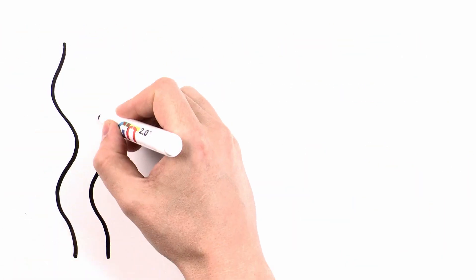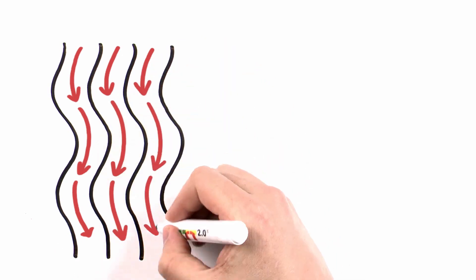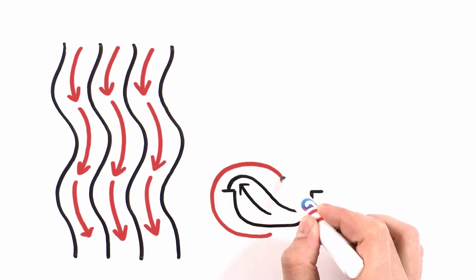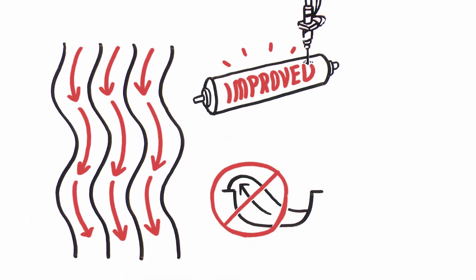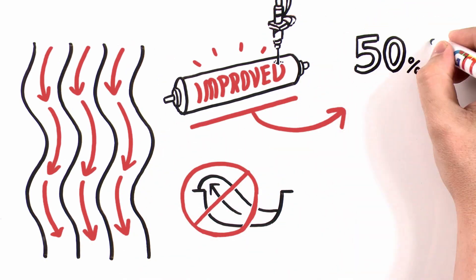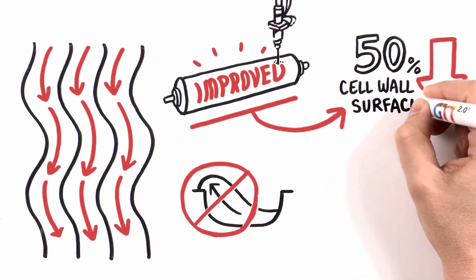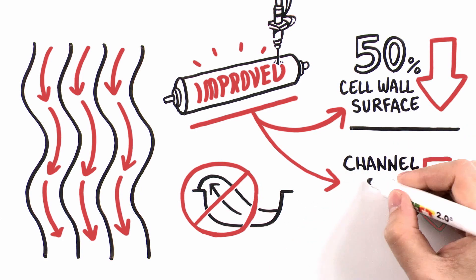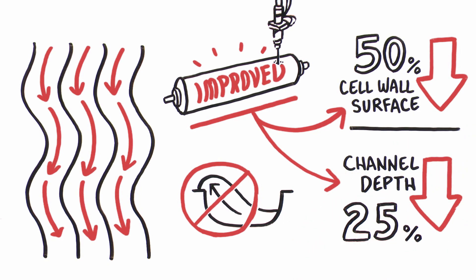Thanks to the wave-based flow of ink on the analog surface, liquid uplift created by angular acceleration is now a thing of the past. The new improved engraving ensures up to 50% reduction of cell wall surface area across the analogs, at the same time decreasing the required channel depth by an average of 25%.